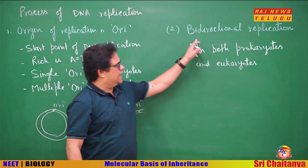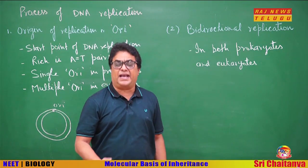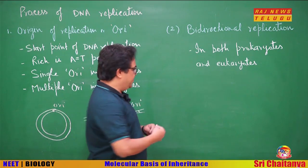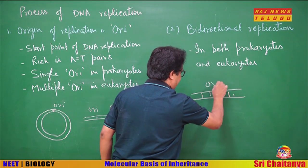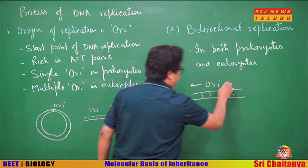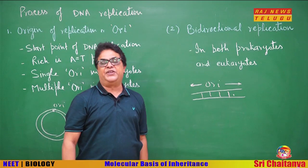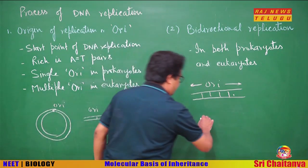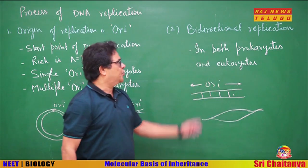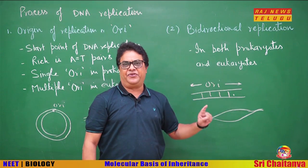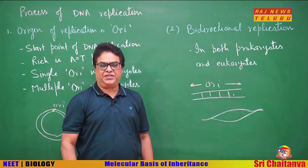The second point is bi-directional replication. Whether it is a prokaryotic or eukaryotic cell, in both cases replication proceeds on both sides of the ORI. This is called bi-directional replication. Under the electron microscope you see an eye- or bubble-like structure growing, which proves replication is bi-directional. If radioactive nucleoside triphosphates are used, radioactivity appears at both ends.